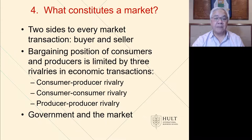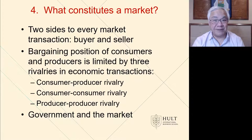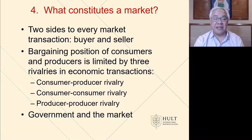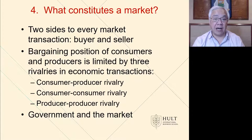What constitutes a market? There are two sides: a buyer and a seller, and the market helps make that exchange occur. Bargaining positions, as seen in Porter's Five Forces, come from many different aspects — consumer to producer, consumer to consumer, and producer to producer. These rivalries form the dynamics in which a market operates. Another important player is the government, whose regulatory practices and constraints affect both the production and exchange of goods.